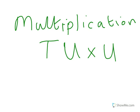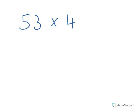This is about multiplication where we look at tens and units times by units, so two-digit numbers times by single-digit numbers. Let's start by looking at the sum 53 times 4.